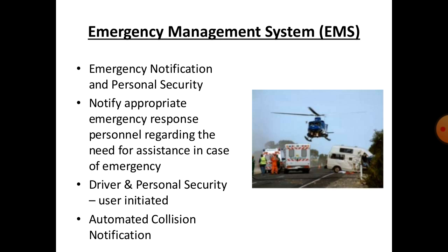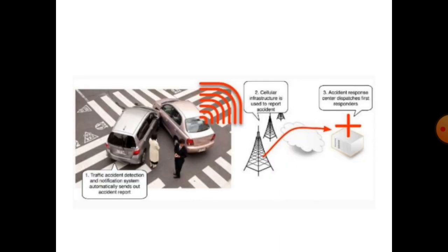Next is the Emergency Management System (EMS). During an accident or any medical emergency, EMS is required. Emergency notification and personal security are most important. The system notifies the appropriate emergency response personnel about the need for assistance. Automated collision notification reaches the main office — if two cars collide, a signal directly reaches the main office indicating the accident location.